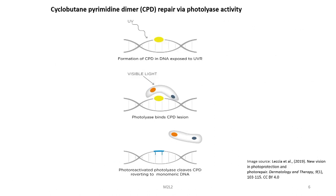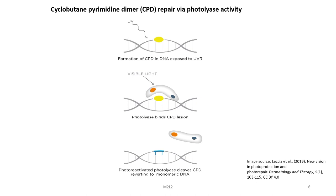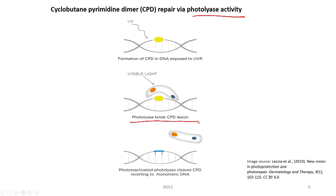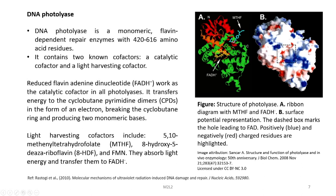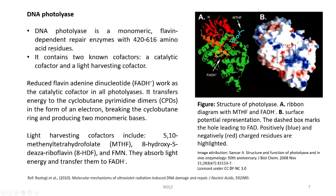We will discuss these in detail in a stepwise manner. Let us first discuss the CPD or cyclobutane pyrimidine dimer repair via photolyase activity. Whenever a UV ray hits the DNA, there is a formation of a cyclobutane pyrimidine dimer or CPD dimer in the DNA. In the presence of visible light, the photolyase binds to this CPD lesion and repairs it, reverting it back to the monomeric DNA.